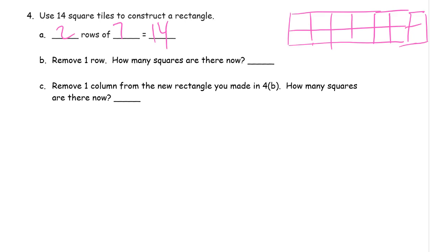And if I remove a row, now all your answers are going to be different if you had a different array than I have. But I'm going to remove a row. Oops. 1, 2, 3, 4, 5, 6, 7. And there are 7 now.